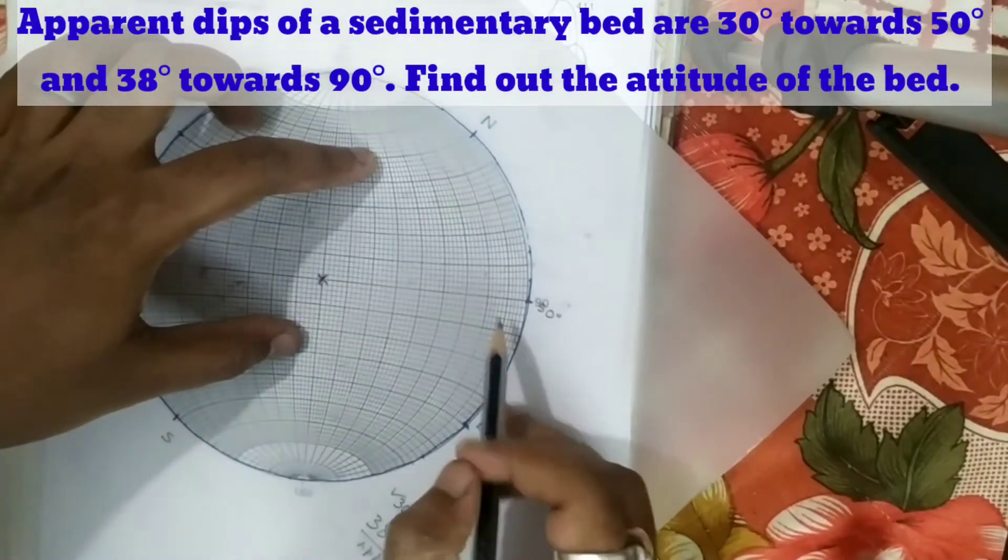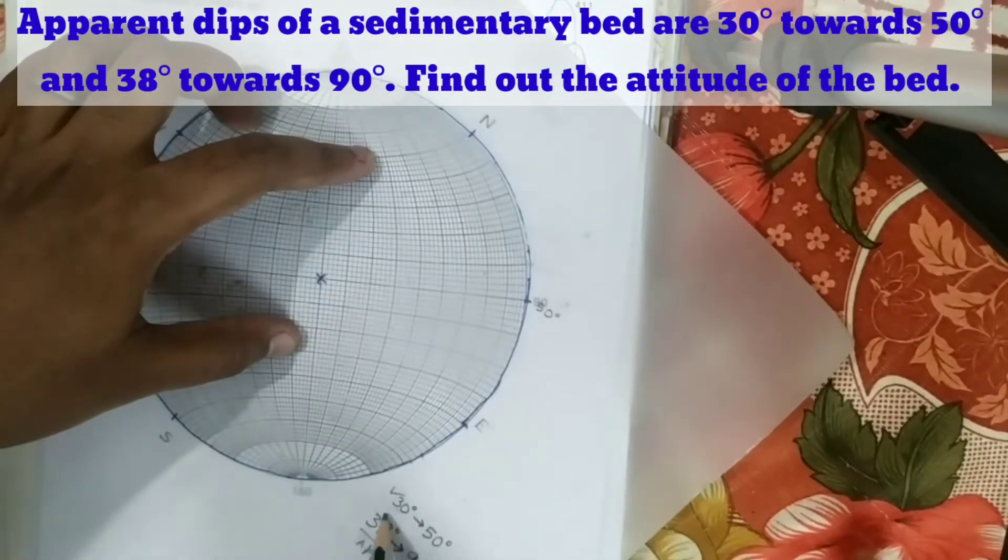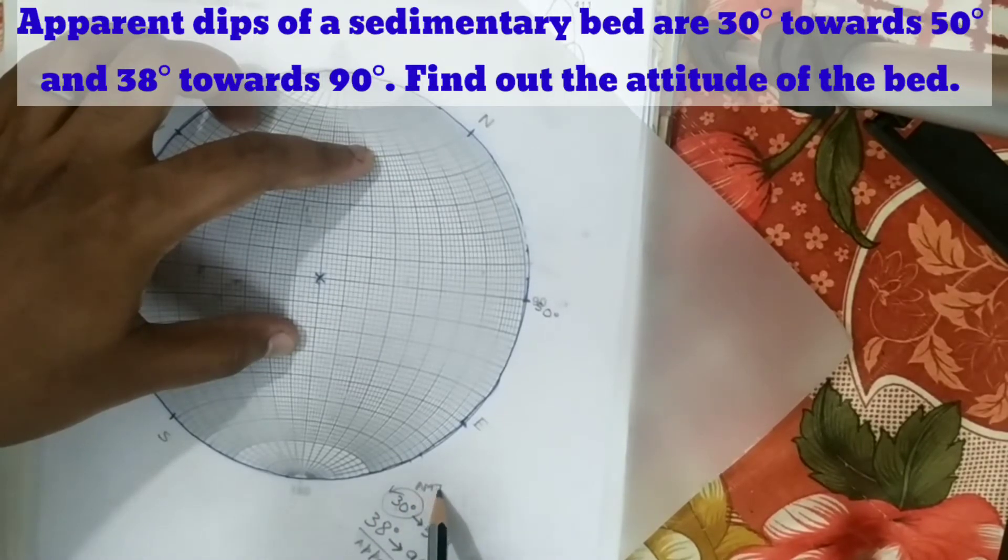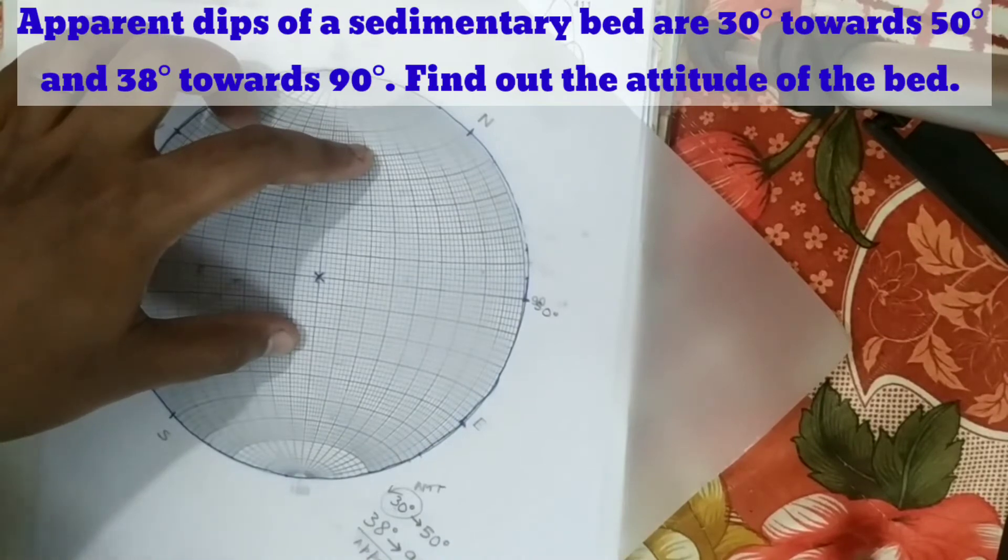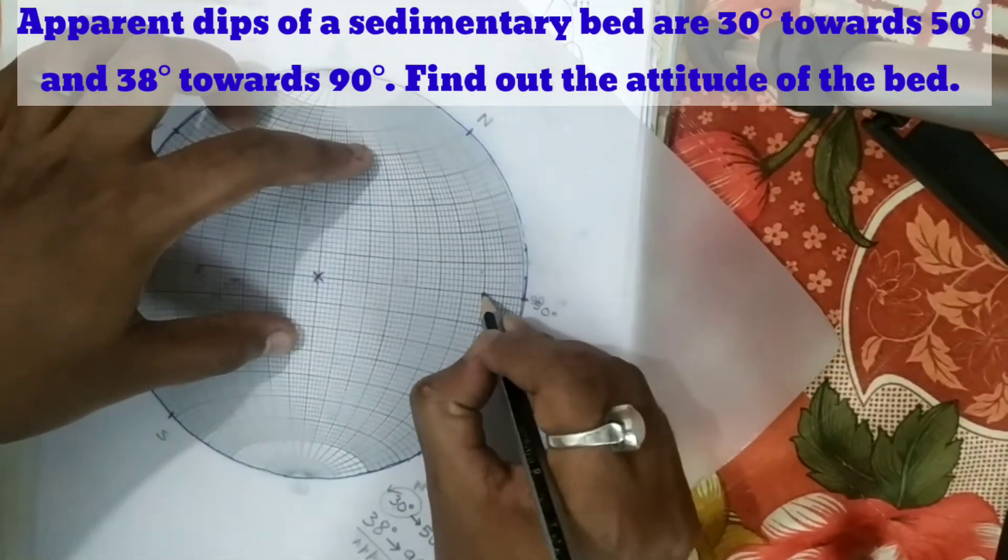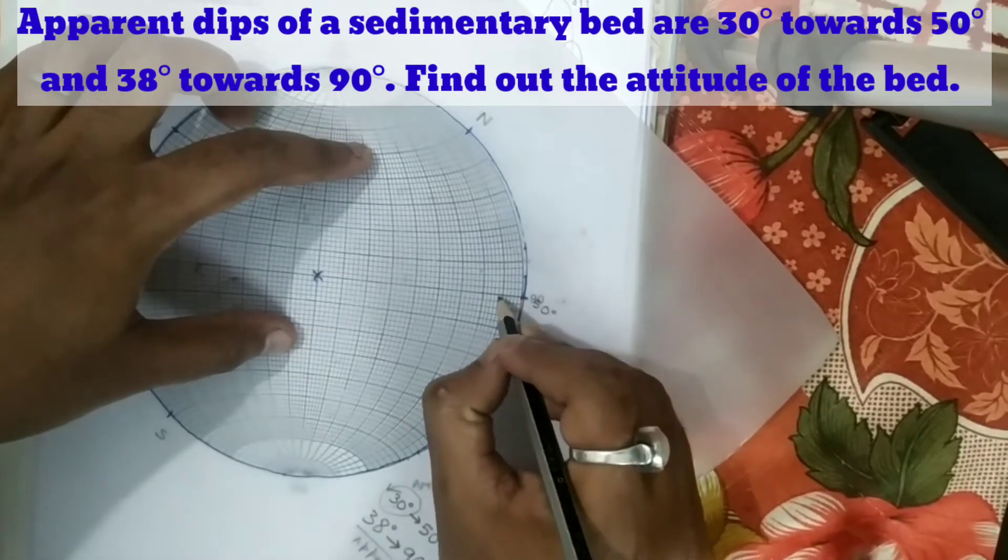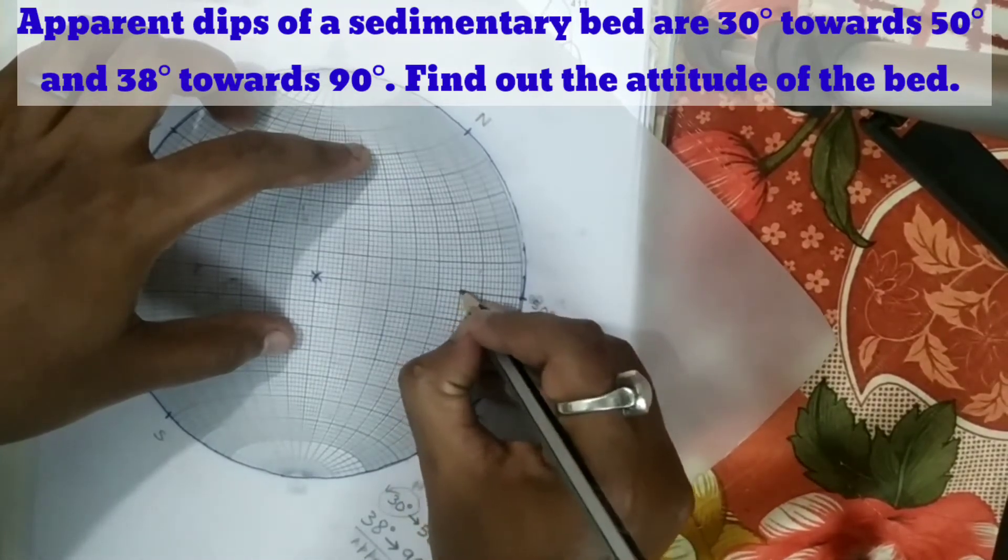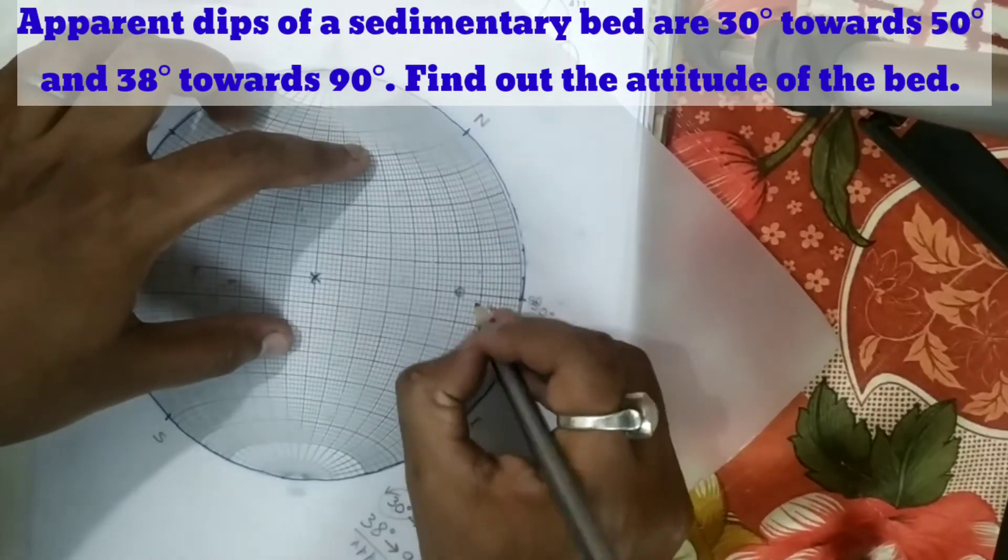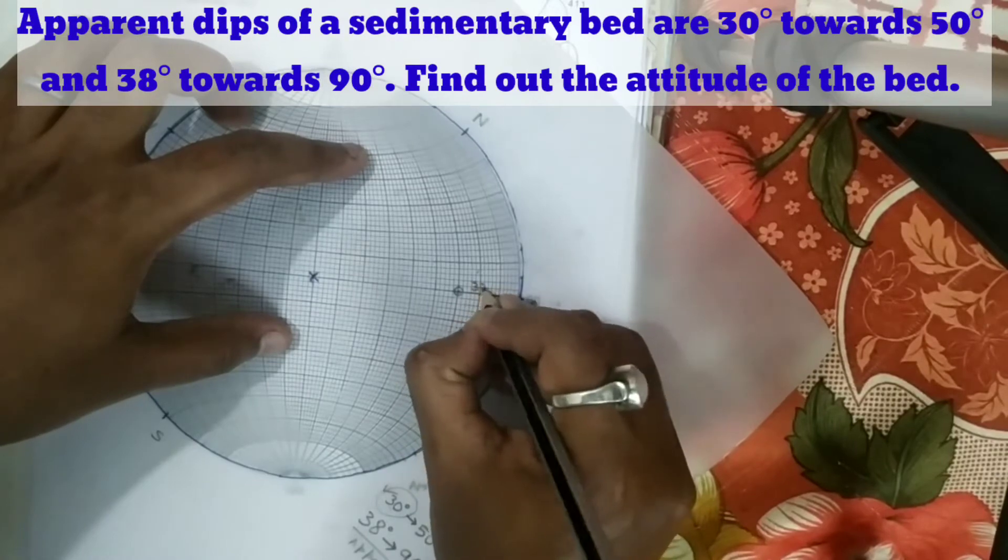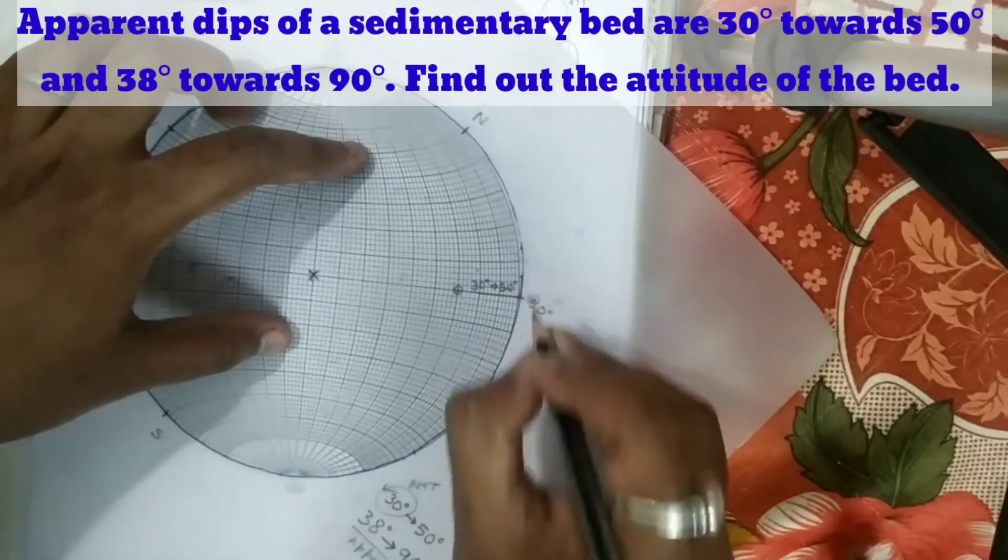The apparent dip amount is 30. So 0, 10, 20, 30 - here it is 40. So point it like this. And here we write 30 towards 50.